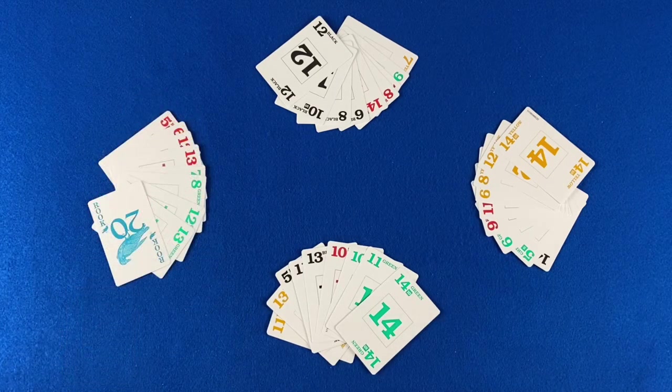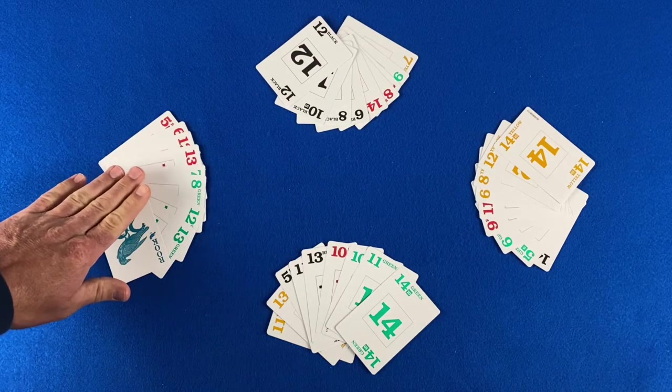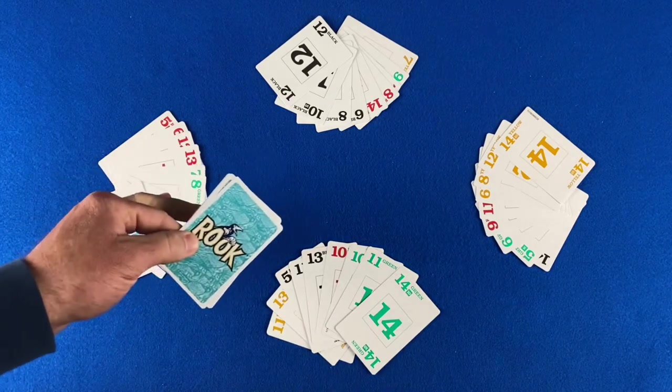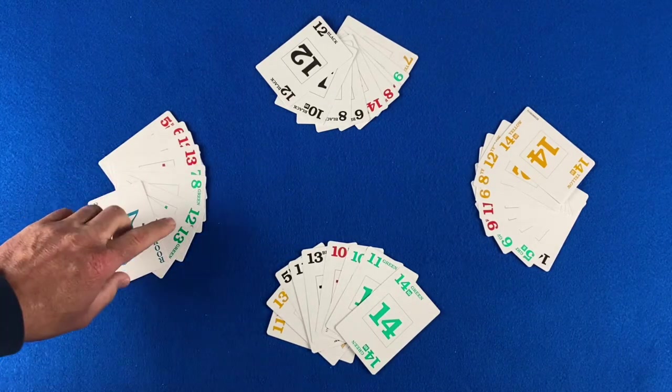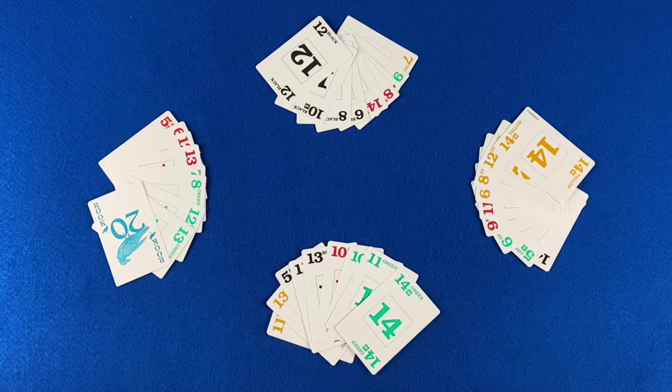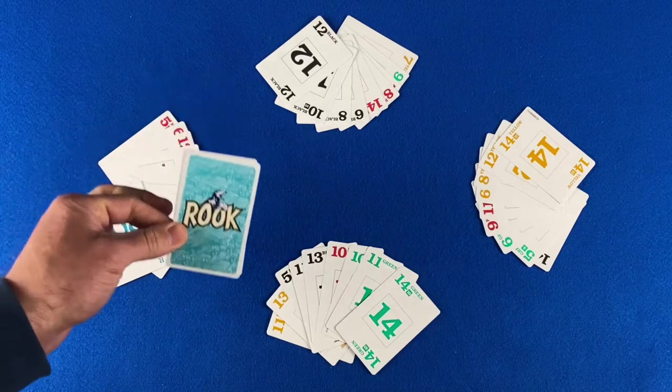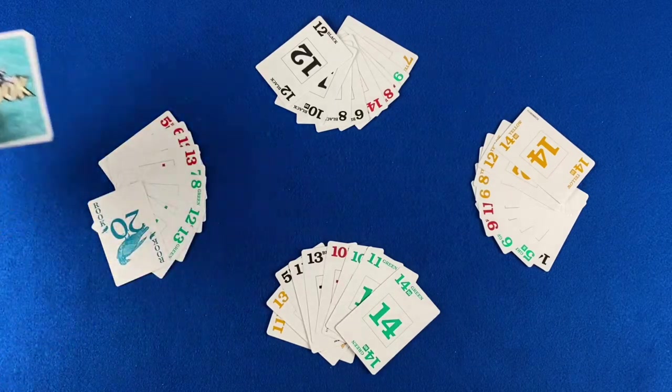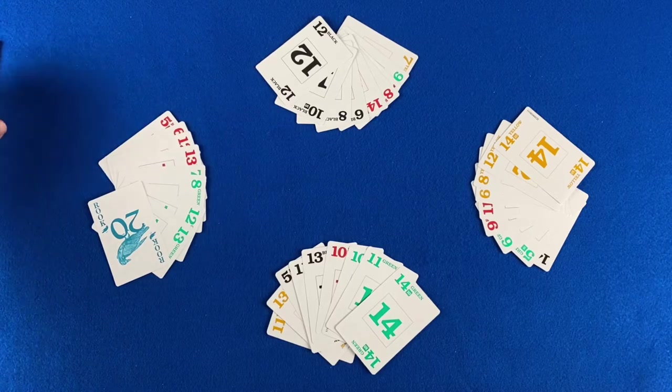For this example, we're playing that the player on the left side of the screen won the bid. They exchanged cards from the nest and they have determined green to be the trump color for the round. The nest will come into play later, so simply place it to the side face down. No one else is allowed to see what cards are in the nest.